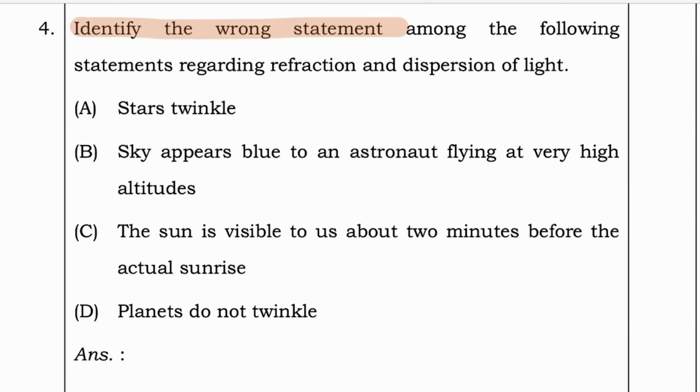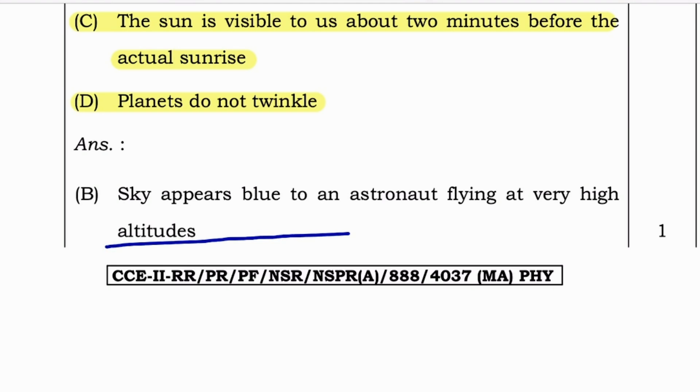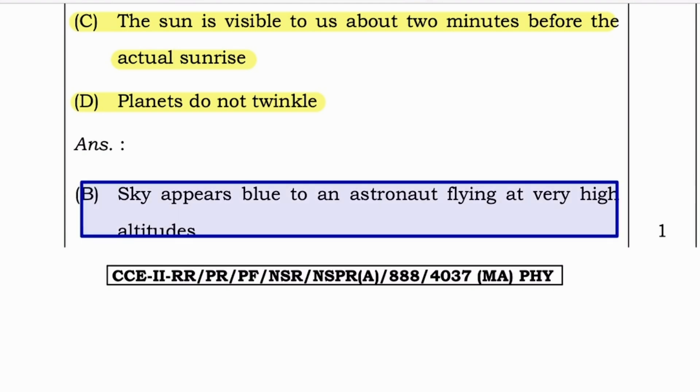Now next question. Identify the wrong statement among the following statements regarding refraction and dispersion of light. Stars twinkle, sky appears blue to an astronaut flying at very high altitudes, the sun is visible to us about 2 minutes before the actual sunrise, or planets do twinkle. So as you all know, the correct answer is option B, sky appears blue to an astronaut flying at very high altitudes.